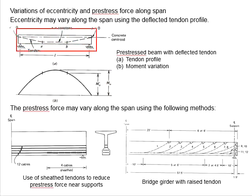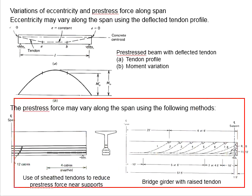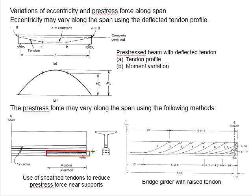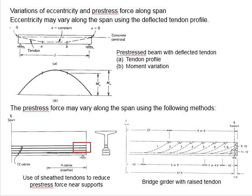If the tendon profile is properly designed, it is possible to totally eliminate the stress so that the entire beam section possesses no stress. Now we look at the method of adjusting P along the span using the debonding method. Taking this as an example, four strands are being debonded — meaning the tendons are sheltered to reduce direct contact between the tendons and the concrete. This effectively results in fewer cables transferring stress into the concrete.